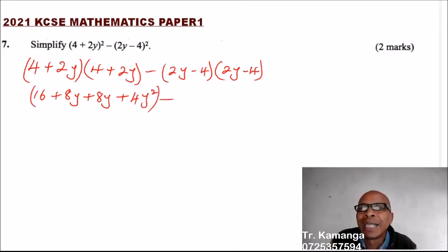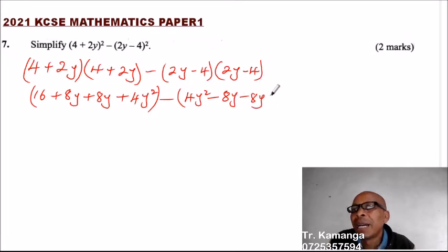And put the bracket there. 2y times 2y, that will give you 4y². This is 2y multiplied by 4, that will be minus 8y. This is minus 8y. And finally we have plus 16.